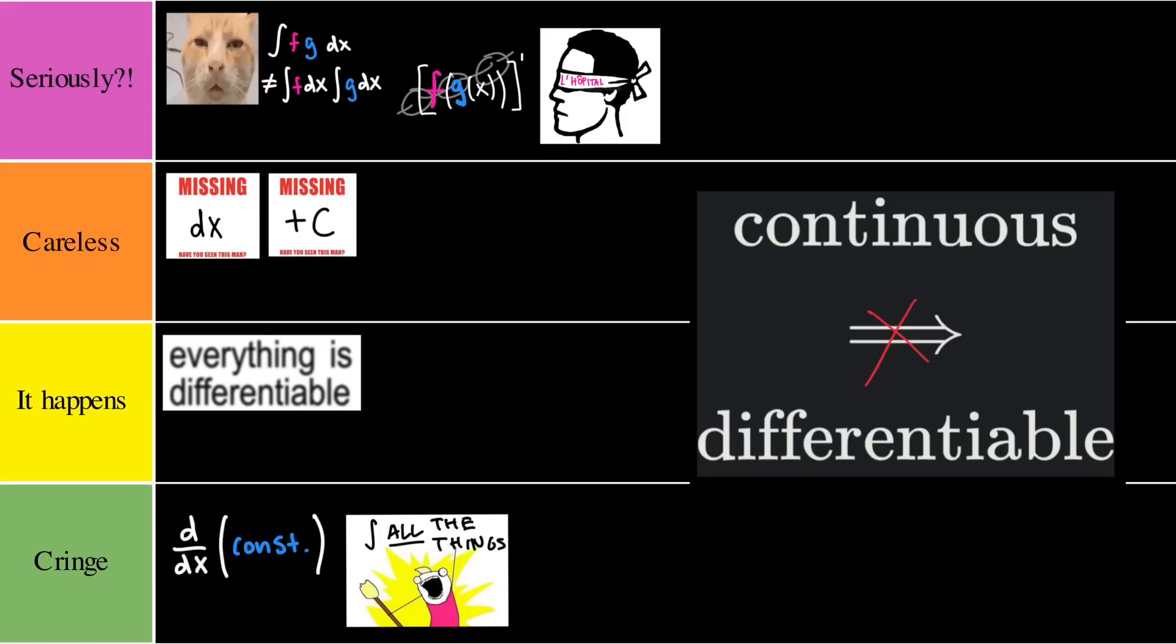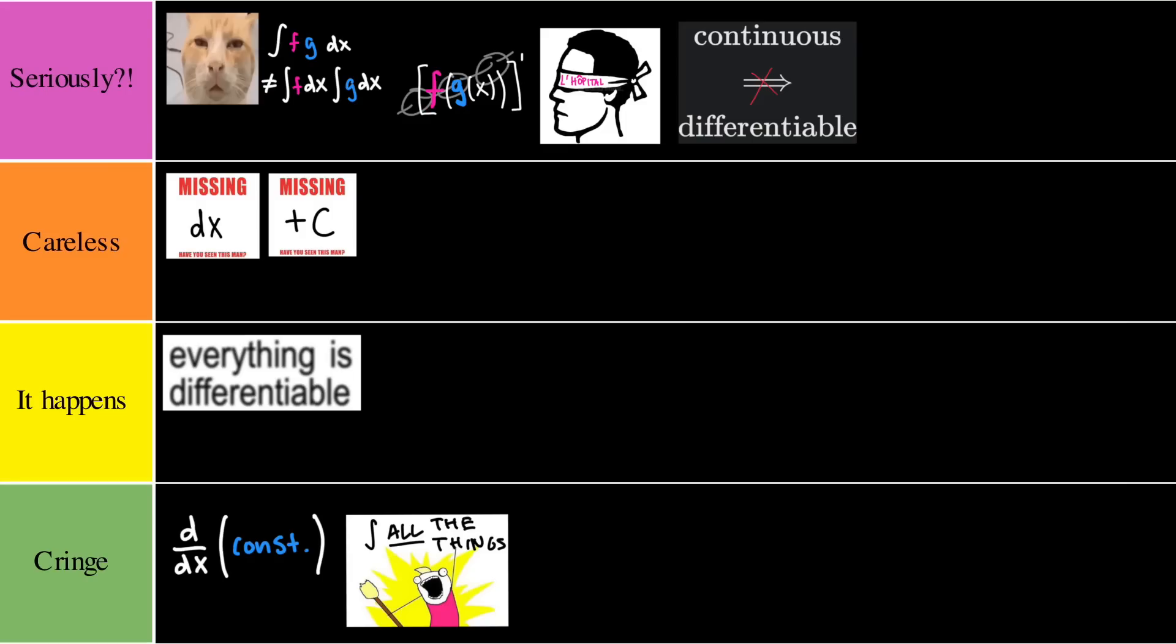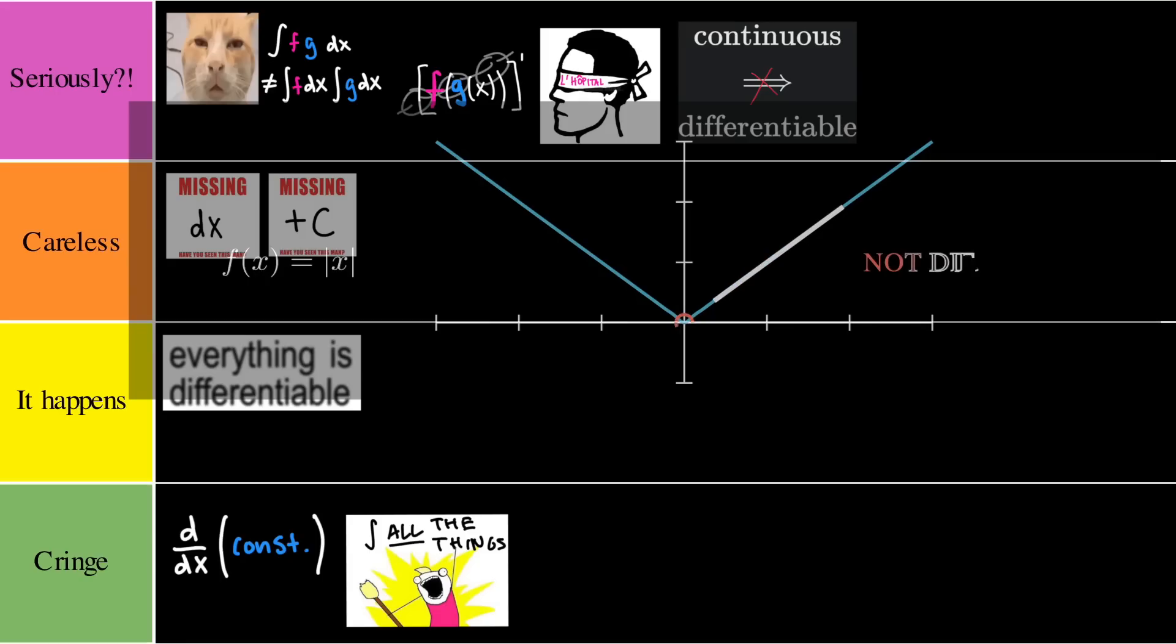Next up we have a cursed one. Continuous implies differentiable. This one was just wrong. This would have to go into a seriously tier. Sure, if a function is differentiable, it is continuous. But if you throw the arrow in another direction, it doesn't hold. A function can be continuous but not differentiable. Think of the graph of absolute value of x. Yes, it is continuous but it's not differentiable at the point zero.